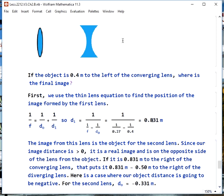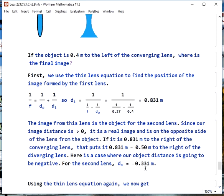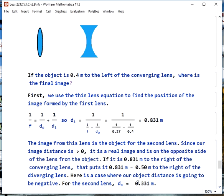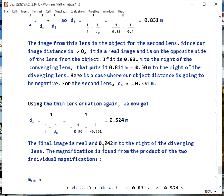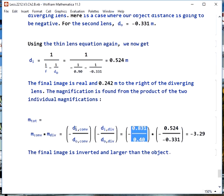However, that places it over here to the right of the diverging lens. Our image distance is real over here, but it's on the opposite side of this lens from the object. It's so far to the right that it's to the right of the diverging lens. This is the case where our object distance for this lens will actually be negative. It would be negative 0.331 meters. Now we use the thin lens equation again. We put in our negative focal length for the lens, our negative object distance, and we get 0.524 meters. So our final image is 0.524 meters to the right of the diverging lens. To find the magnification, we plug in the individual magnifications and take their product, and we end up with negative 3.29, which tells us the final image is inverted and larger than the object.